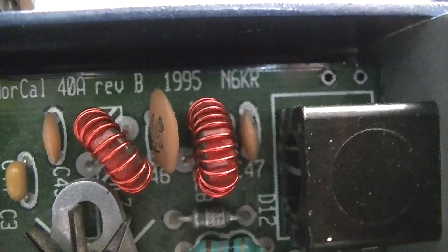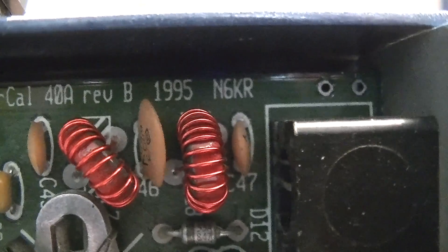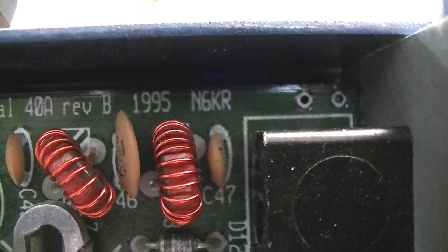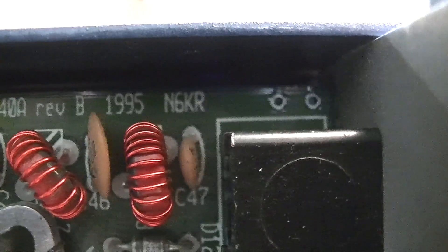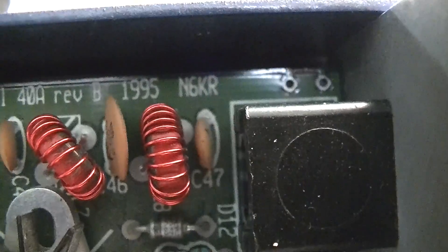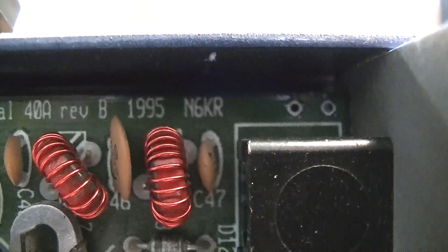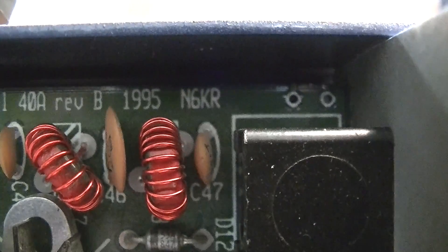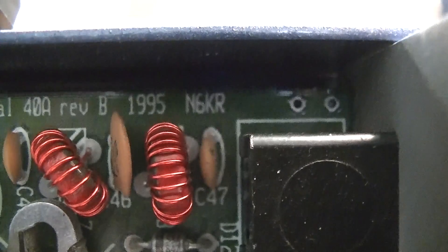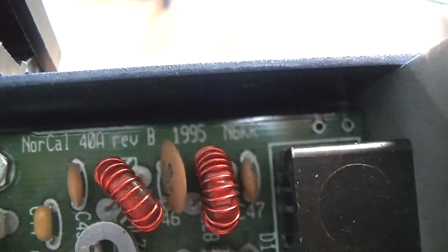This transceiver is the 40A. It's a revision B. It's the newest one, 1995. This is the date on the board, and you'll notice N6KR, if that call sounds familiar to anybody out there. That's Wayne Burdick. He's the person who started, I guess, the co-owner of Elecraft. So, this is his earlier design that he did for the NorCal QRP Club.